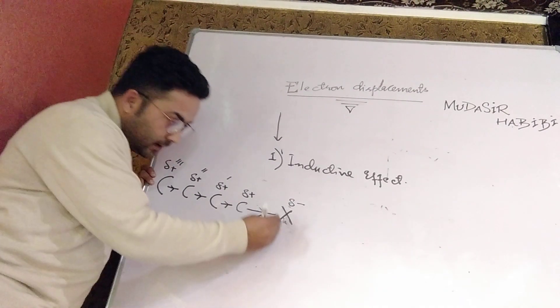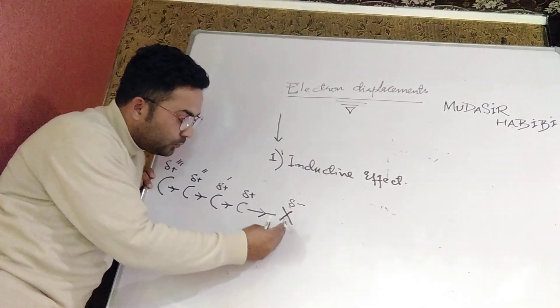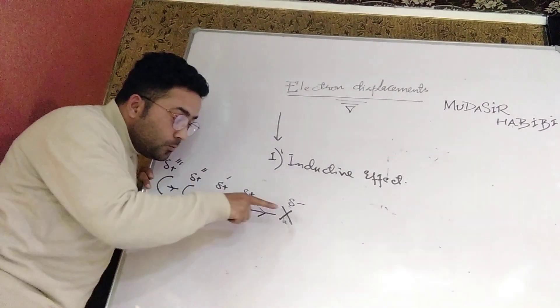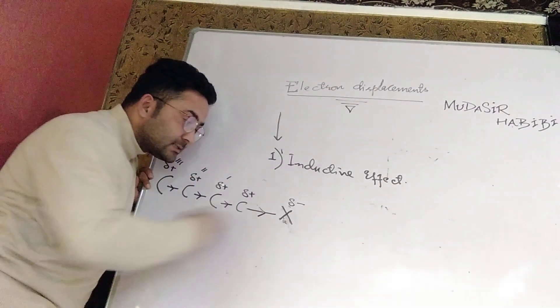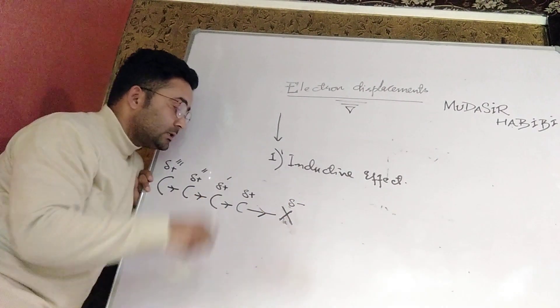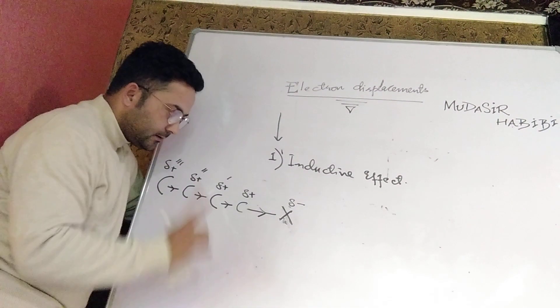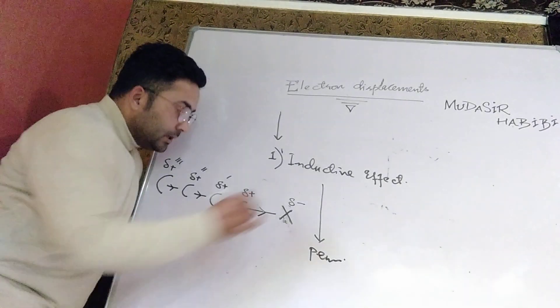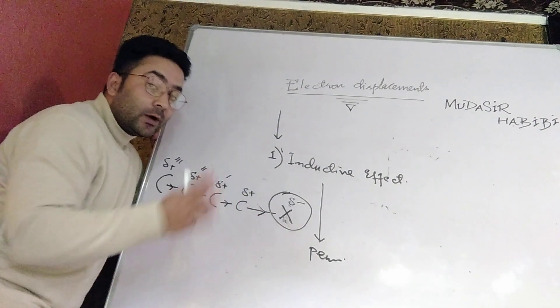What actually happens is we have one atom which withdraws electrons towards itself, and due to that, positive charge is created on the carbon. Bond polarity develops, but this bond polarity doesn't stay only on this bond; it gets transmitted along the carbon atom chain. First thing is inductive effect is a permanent effect. It is permanent because as long as X is here, this effect will remain. If you remove X, the effect will disappear.